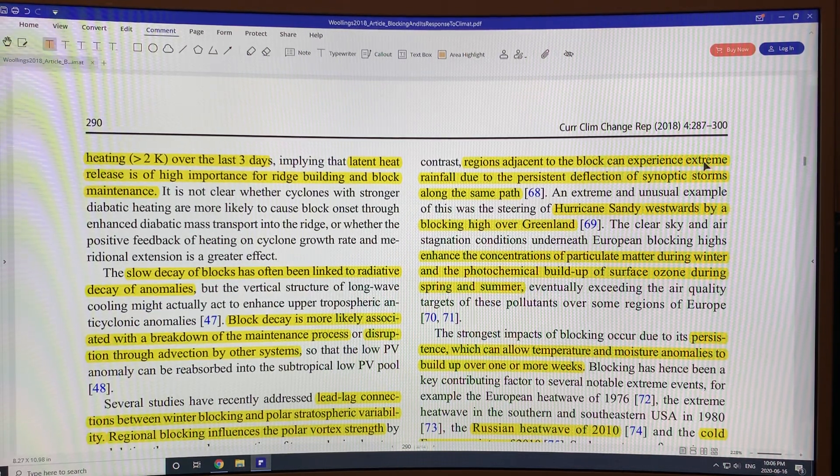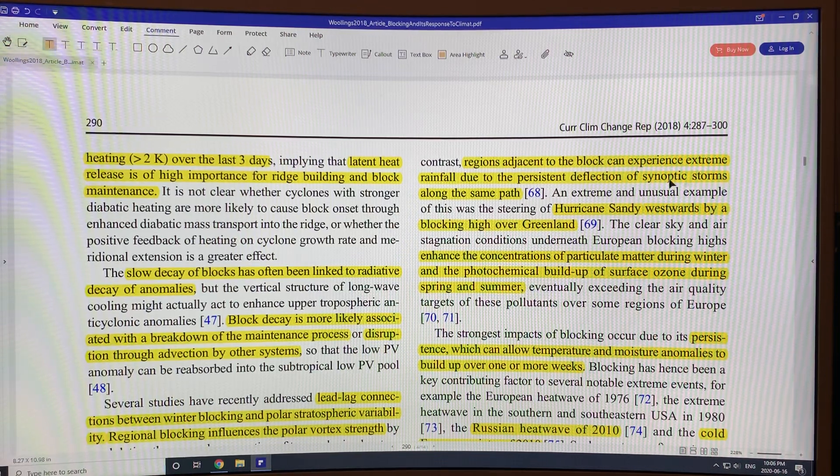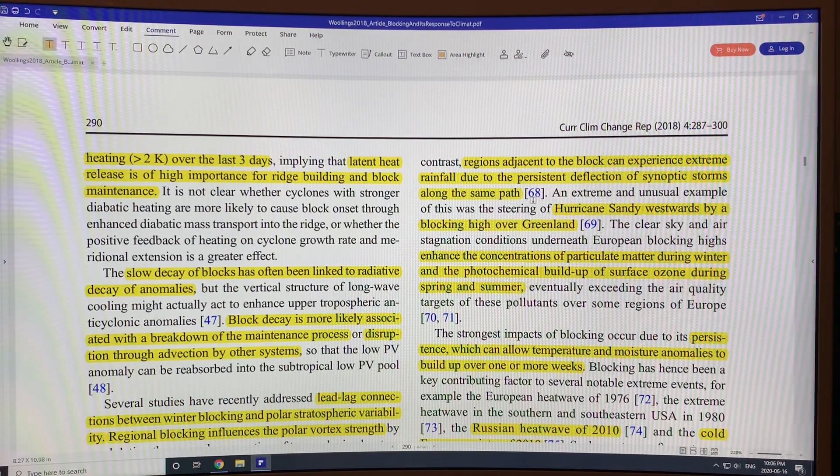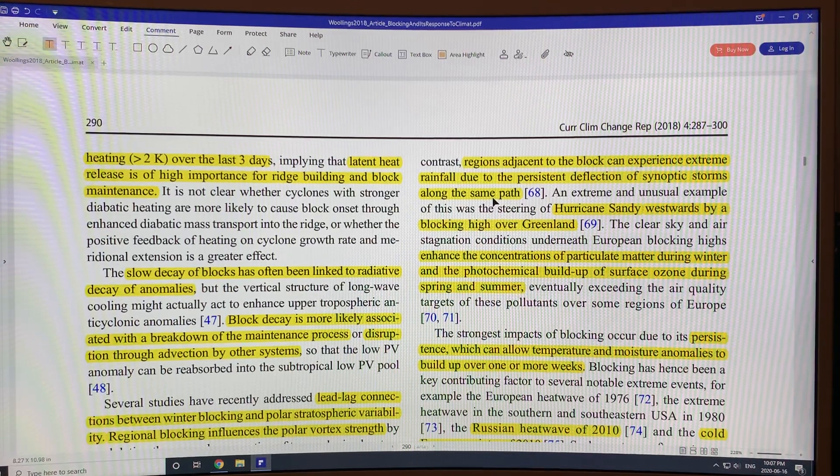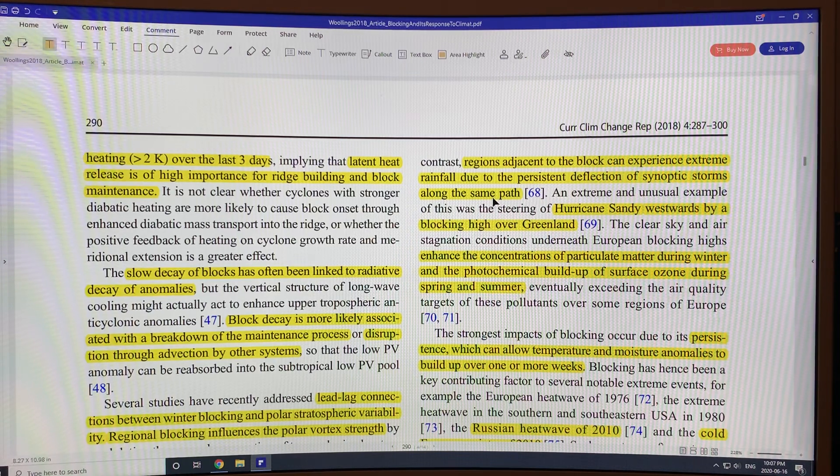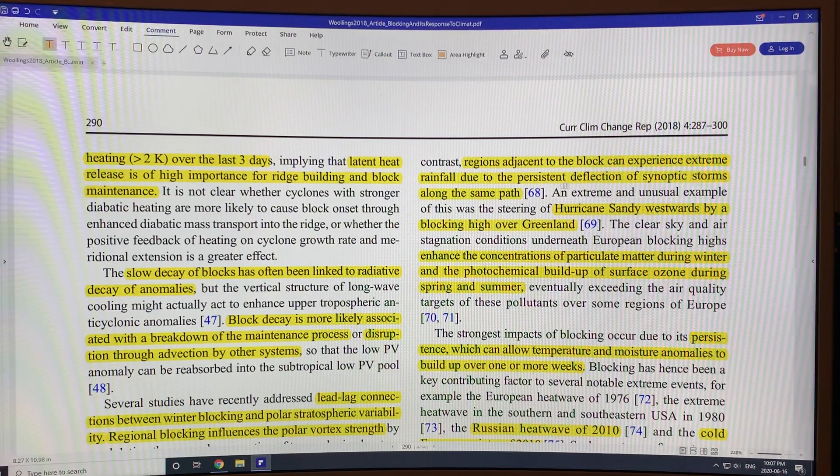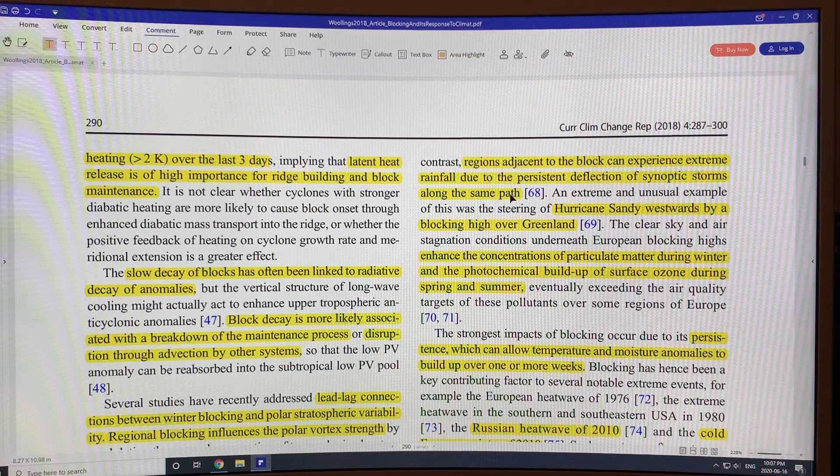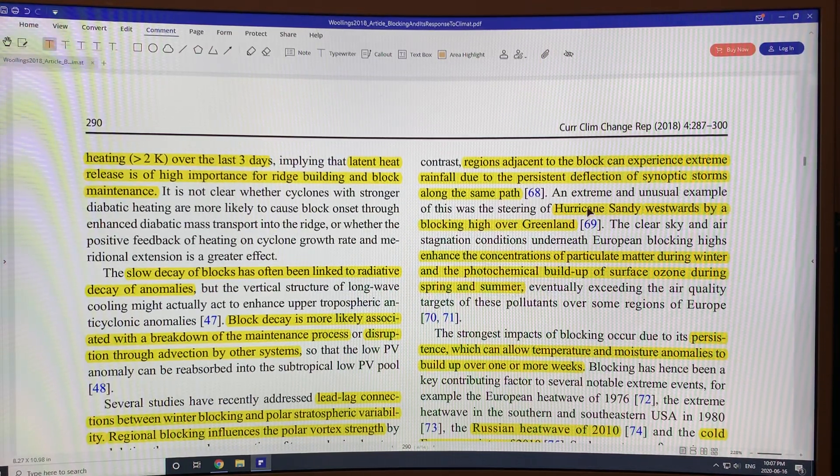Regions adjacent to the block can have extreme rainfall due to the persistent deflection of the synoptic storms along the same path. So the block deflects the weather away either northward or southward of the blocked region. And if you get persistent deflection of these storms, there can be excess precipitation and floods in those regions.